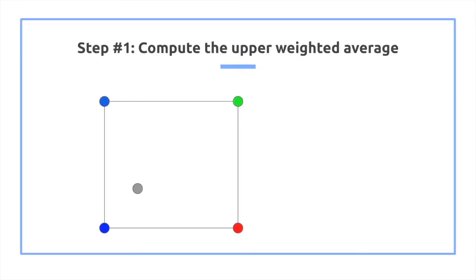So how does this work? Let's go step by step. So here we have a basic four pixels, the deep blues on the left side, and then the green and red on the right side. Then we have this gray that we want to compute the color of.